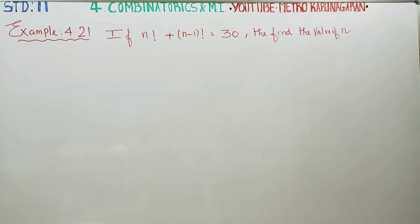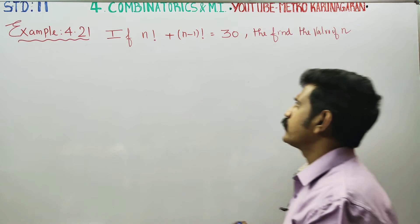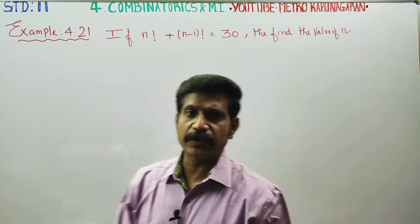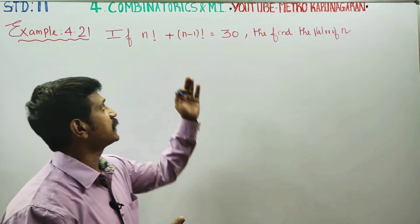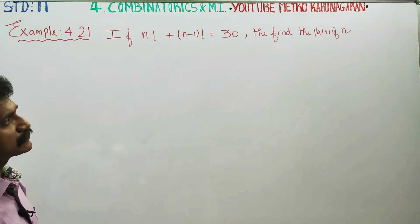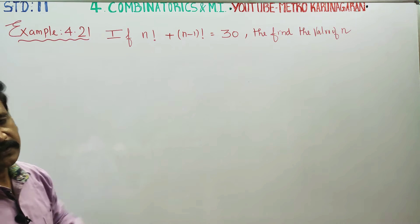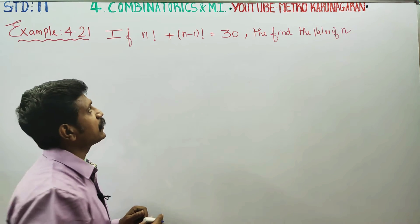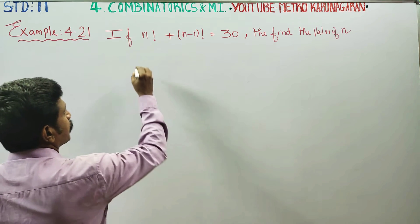Dear 11th Standard Students, I am Mitro Karnagaran. In Example 4.21, if n factorial plus n minus 1 factorial is equal to 30, then find the value of n.